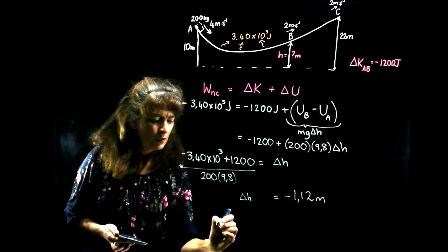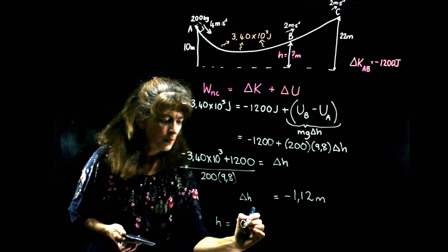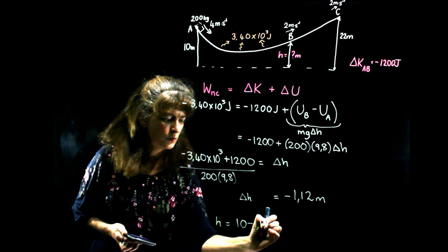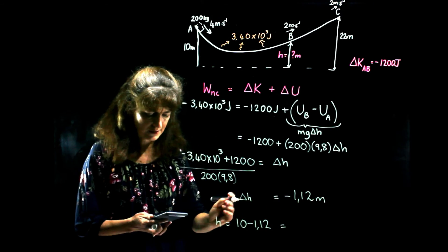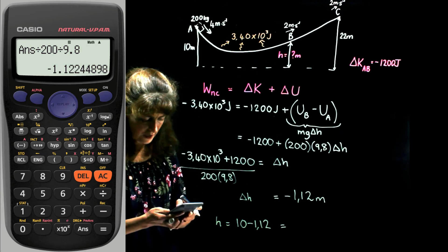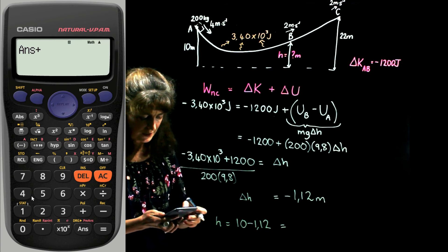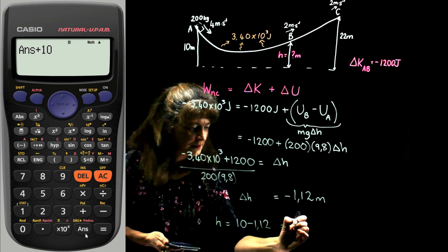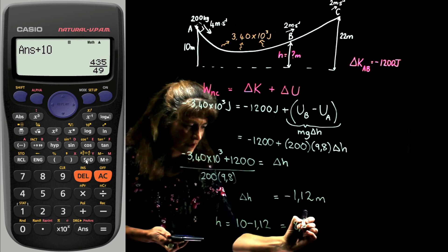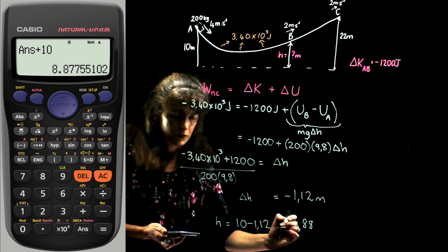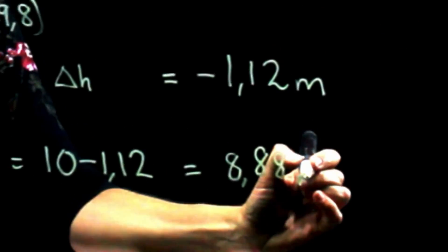So what is H? Well, it's 10 minus 1.12 meters. And what is that? Well, we round it off to 8.88 meters.